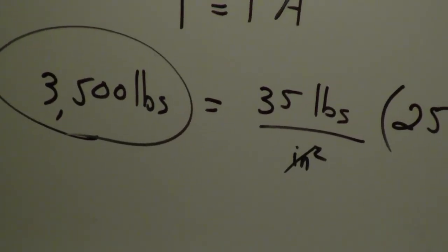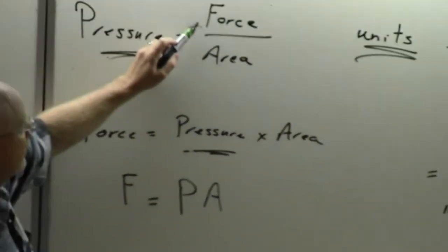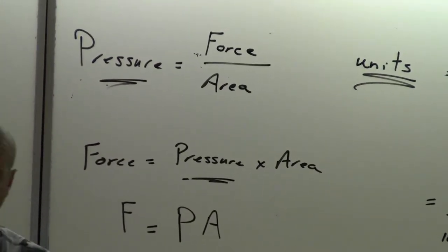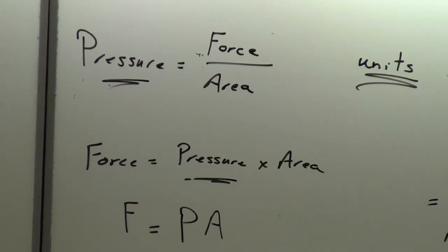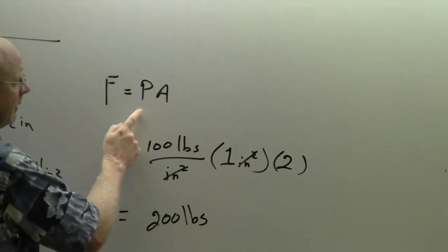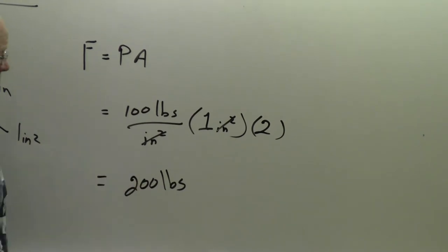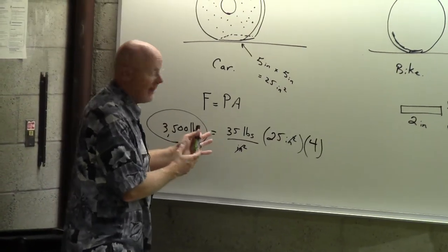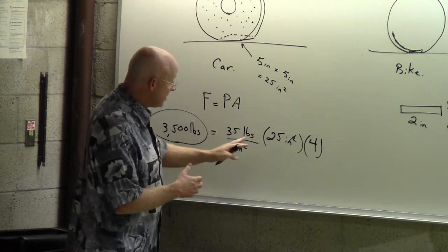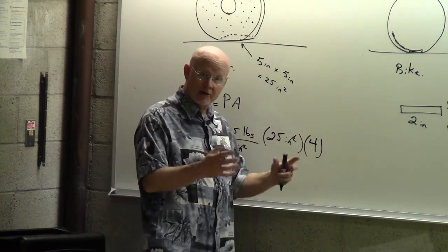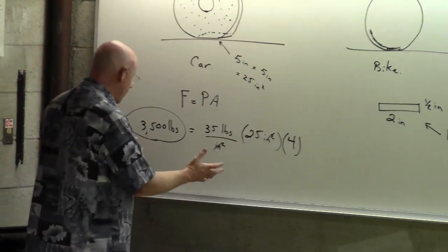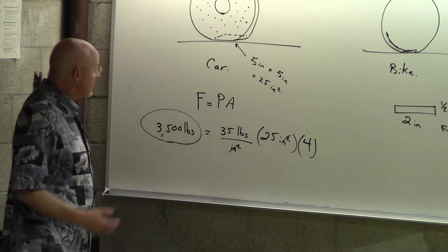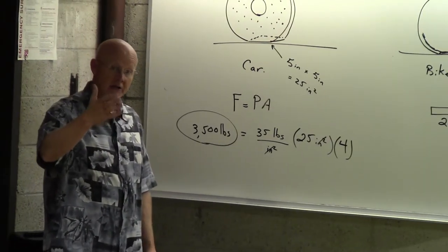That was that important distinction. Pressure is not the total force — it's just how much force you get per unit area. On a bike tire, you may not have much area, but with high pressure you can support 200 pounds. A car surprisingly doesn't need that much high pressure — only 35 — because the four wider, longer tires account for the extra area.